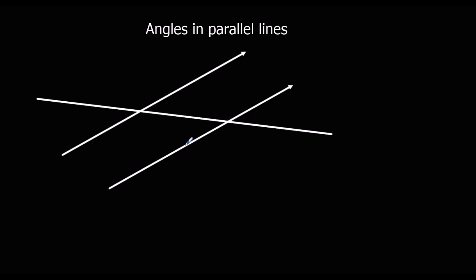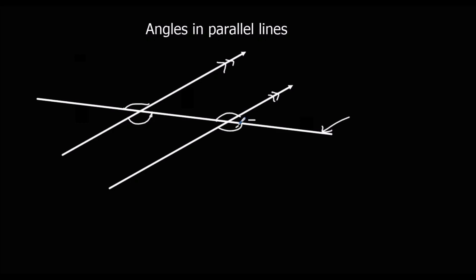Whenever we've got parallel lines and a line that goes through the middle of them — depicted by the arrows — this line going through the parallel lines creates the same angles at each intersection. These two angles are the same as these two angles, and these two angles are the same as these two angles.